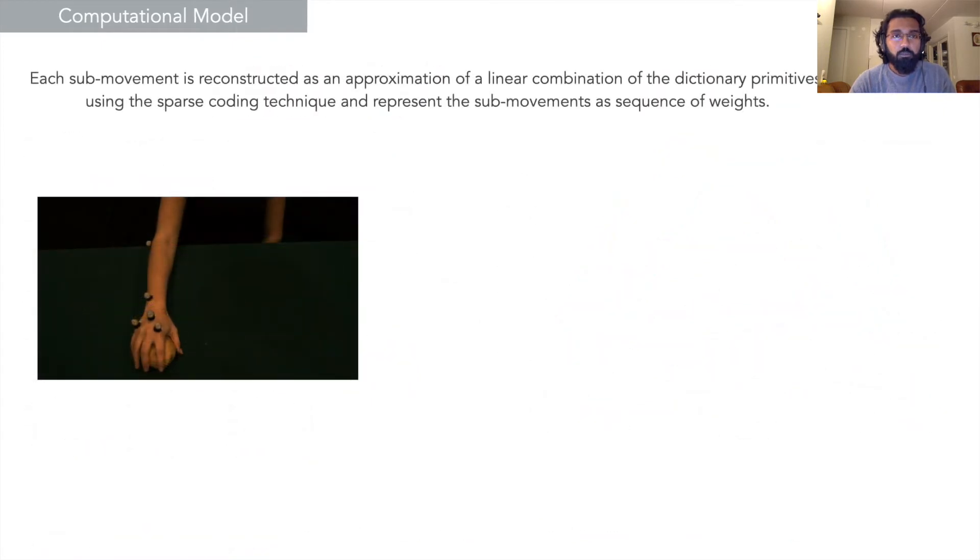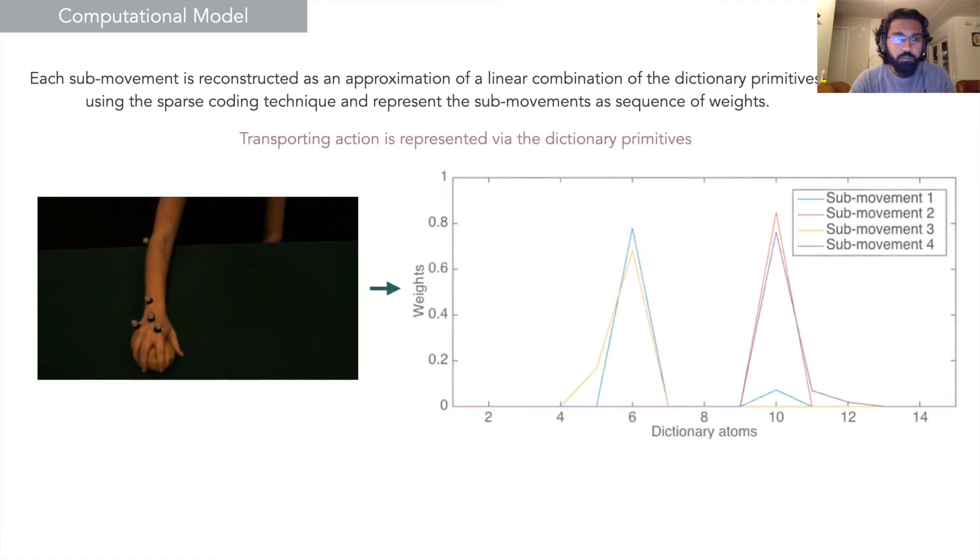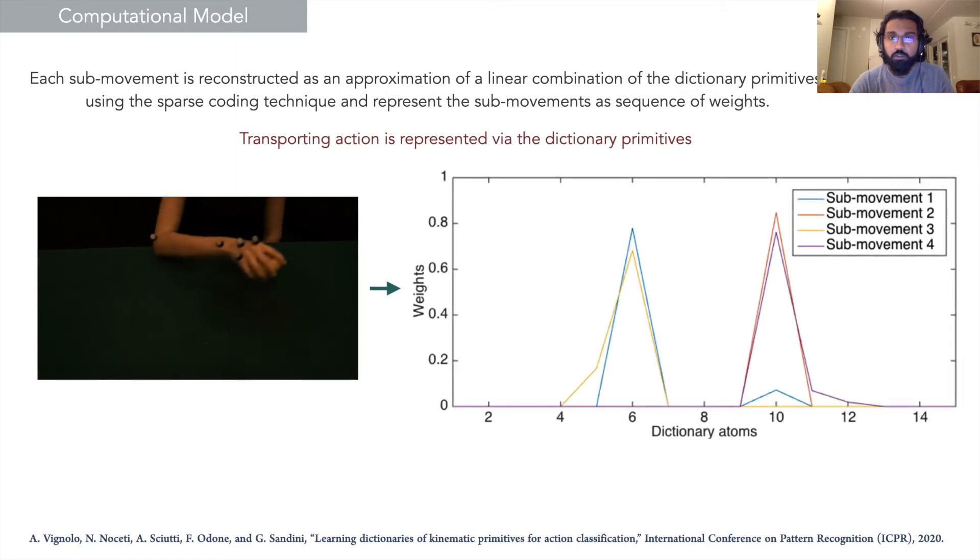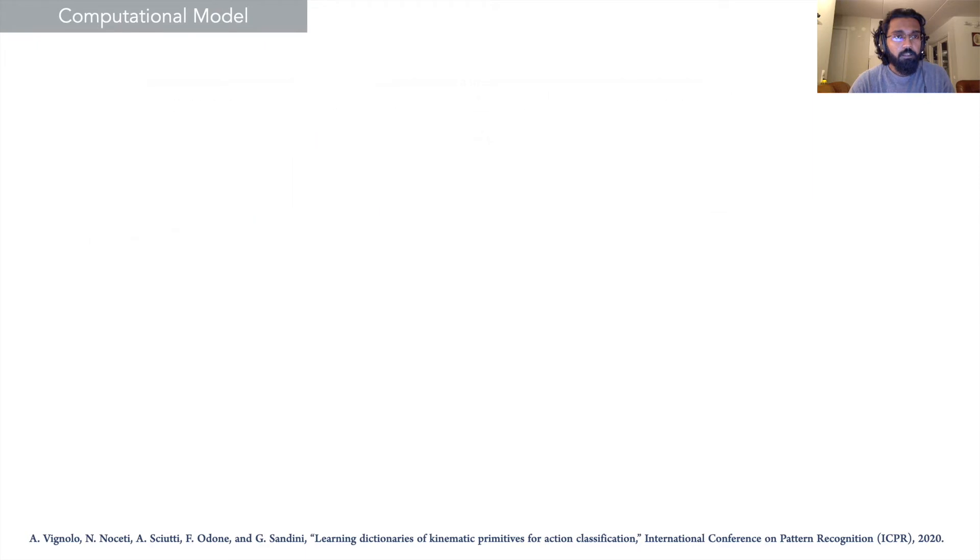Each sub-movement is reconsidered as an approximation of a linear combination of the dictionary primitives. If we take a transporting action as an example, it can be represented by dictionary primitives in different ways. Here you can see that two of the primitives are more prominently found with four sub-movements.